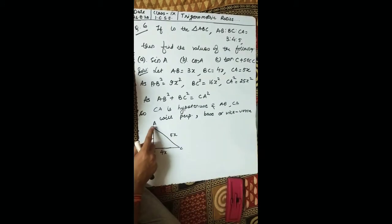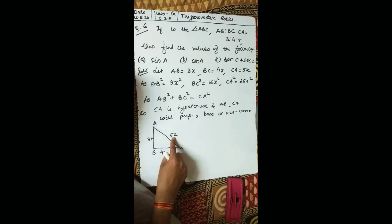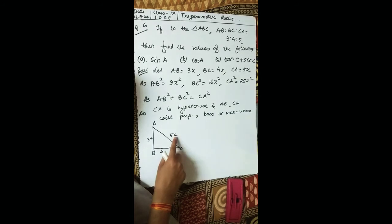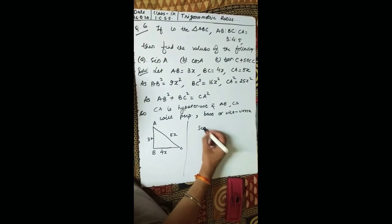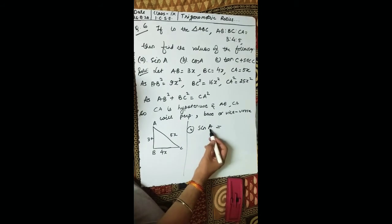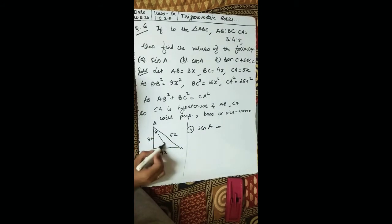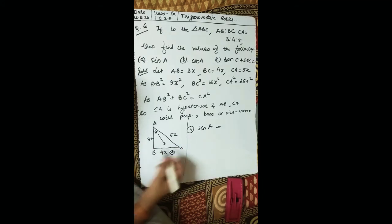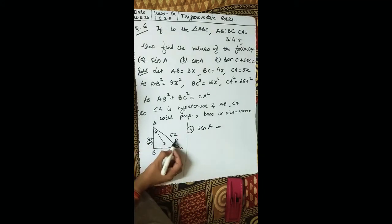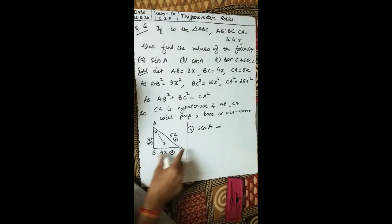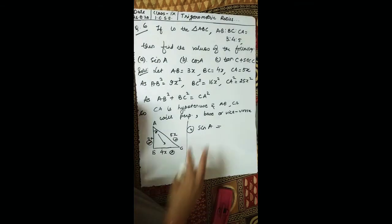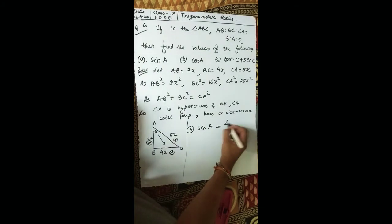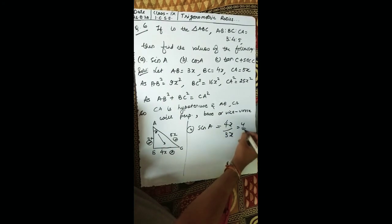So CA (hypotenuse) is 5x, AB is 3x, and BC (base) is 4x. For sin A, the angle is at A, so the opposite side is the perpendicular. The perpendicular here is BC, which is 4x, and the hypotenuse is 5x. Wait — let me correct: sin A equals perpendicular upon hypotenuse, which is 4x upon 5x, giving 4 upon 5.